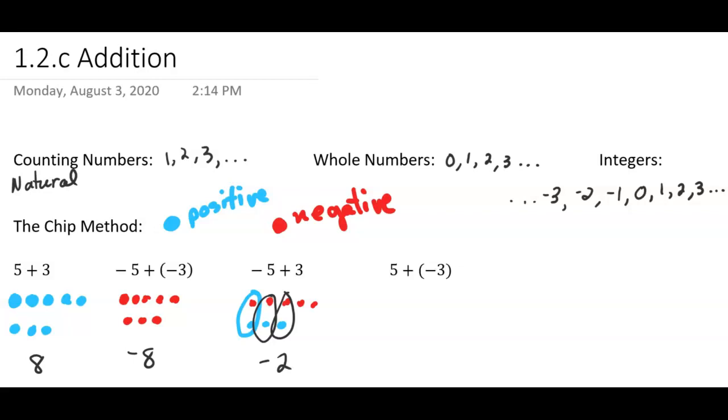Now our last one, we have positive five: 1, 2, 3, 4, 5, and we're going to add negative three chips. All of these are out because they add up to zero. So what do we have? We have a positive two. It's like you had $5 in the checkbook, then you withdrew $3, and now you have $2.